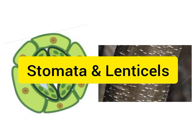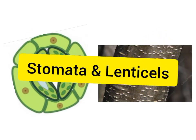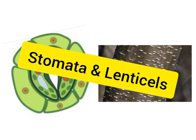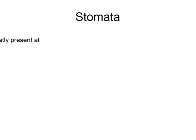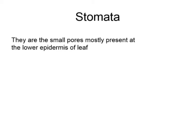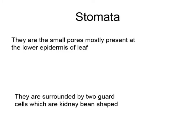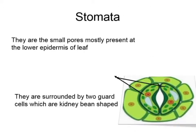Welcome to my channel. The topic is stomata and lenticels. Stomata are the small pores mostly present at the lower epidermis of a leaf. They are surrounded by two guard cells which are kidney-shaped. In this picture you can see there are two guard cells and the opening between these guard cells is the stomata.